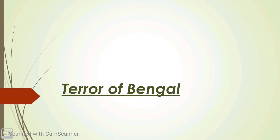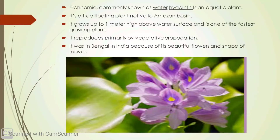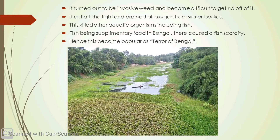Good morning. Today's topic is Terror of Bengal. Terror of Bengal was caused due to Eichhornia, i.e. Water Hyacinth, which is an exotic aquatic shrub that was imported to India during British rule for its beautiful flowers and various beautifully shaped leaves. But as an alien species, it became a great threat to the aquatic life native to those water bodies.